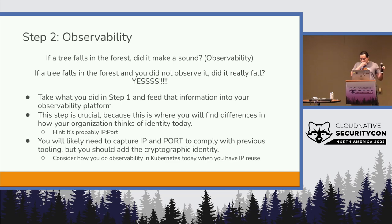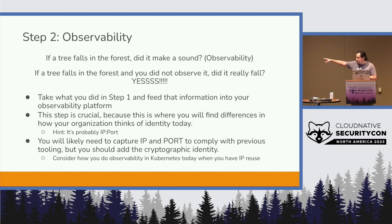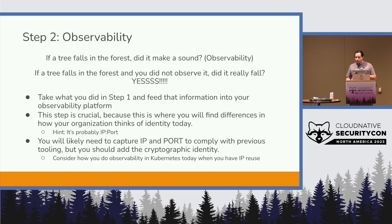Once you have that initial implementation, you also want to make sure you look at the observability. Every single action has to be something that's observed. If a tree falls in the forest and you did not observe it, did it really fall? You can change that to: if you had a security incident or breach — just because you don't know about it doesn't mean it didn't happen. And if it's discovered and you don't have information to show the scope, you may have to assume the worst case. Observability is often defined based upon previous practices, and the number of places where services are identified by IP address and port is significant.